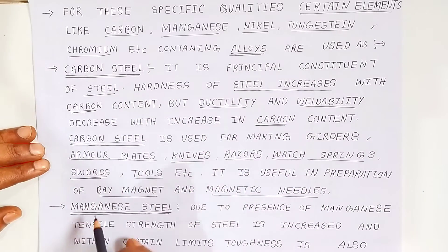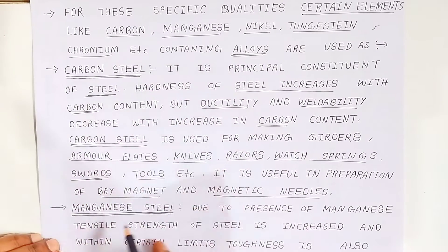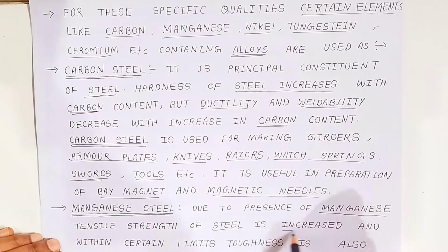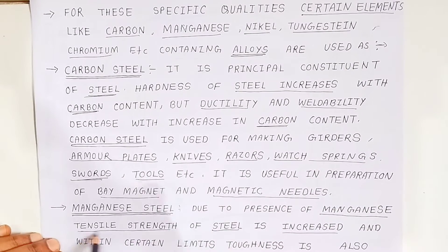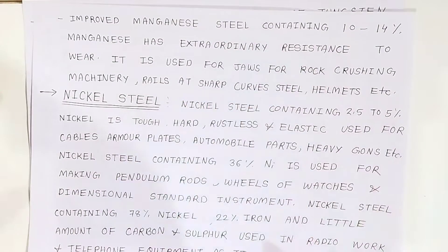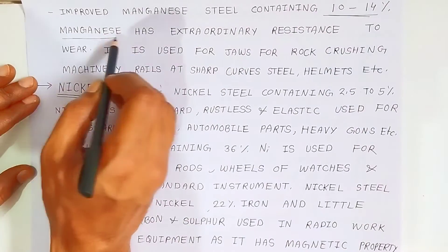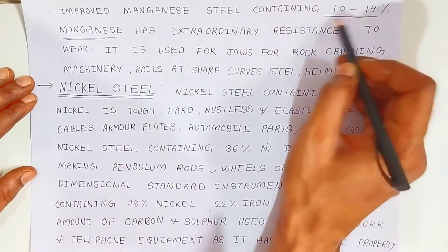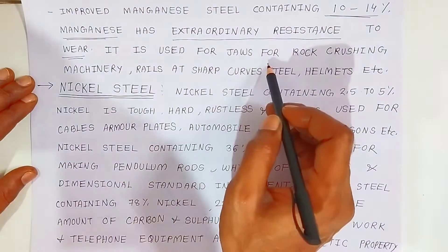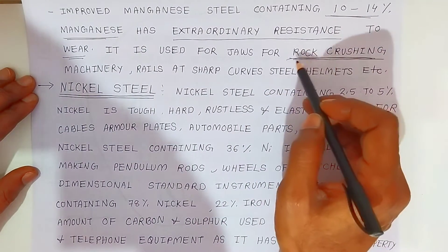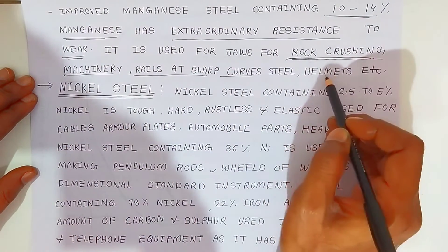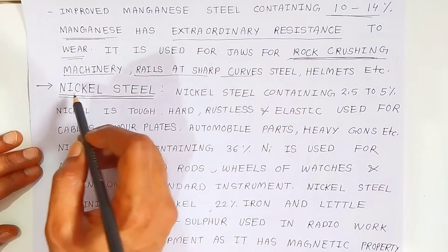Next is manganese steel. Due to the presence of manganese, the tensile strength of the steel increases, and within certain limits toughness also increases. Manganese steel containing 10–14% manganese has extraordinary resistance to wear. It is used for jaws of rock crushers, railway lines at sharp curves, steel helmets, and various machinery parts.